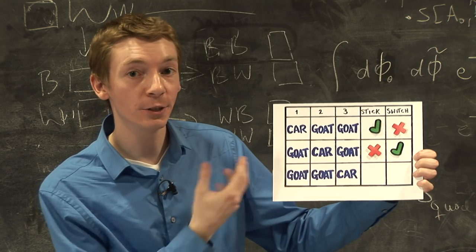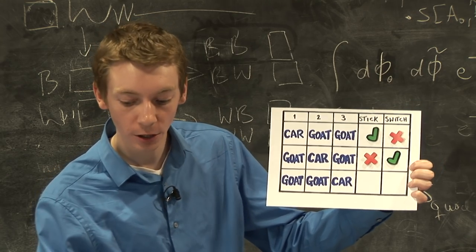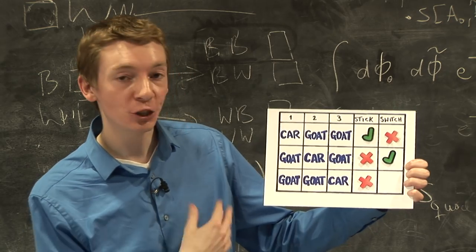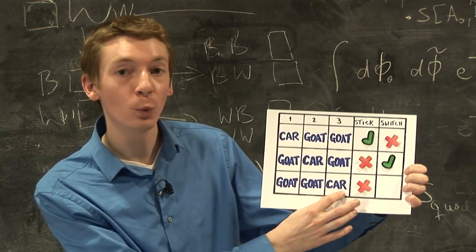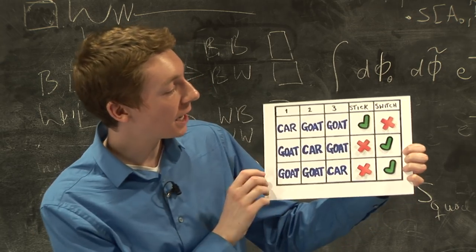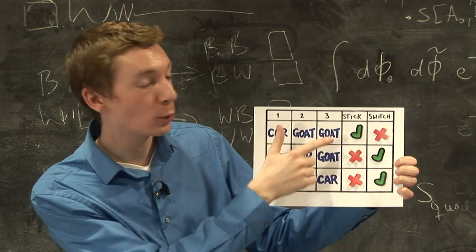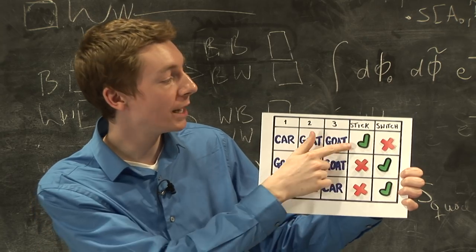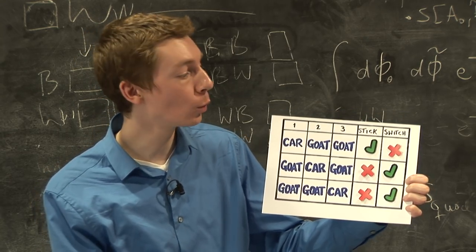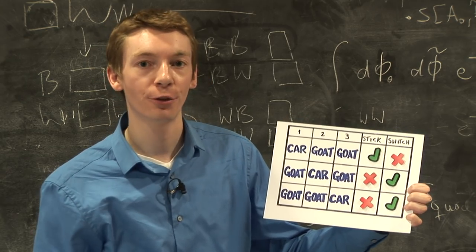And in the third case, if you stick with door number 1, you're going to lose. So we'll put an X there. And if you change your mind, you're going to win the car. So we'll put a tick there. And as you can see, if you stick with your original choice, you win one out of three times. But if you change your mind, you will win two out of three times.